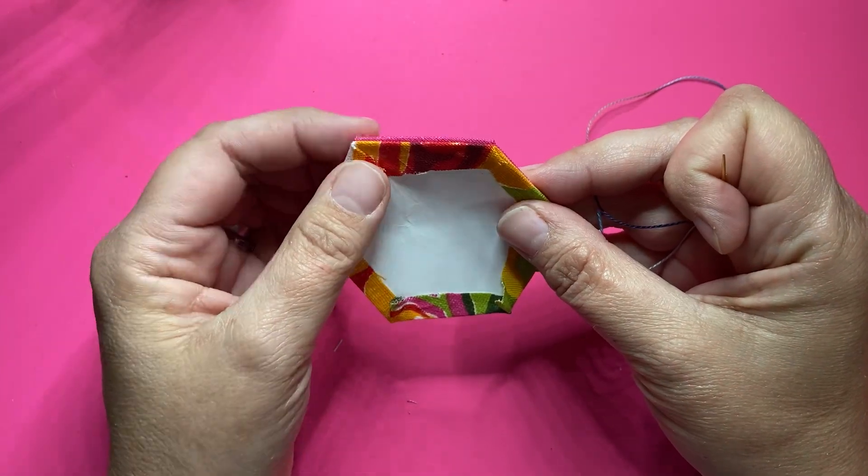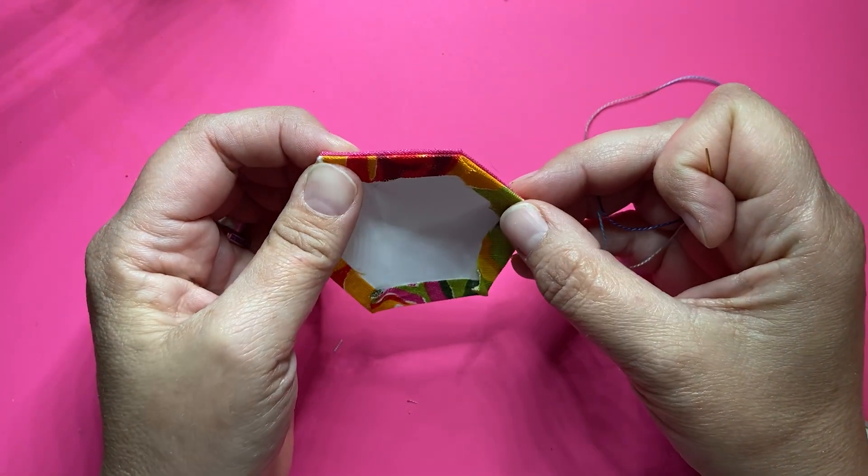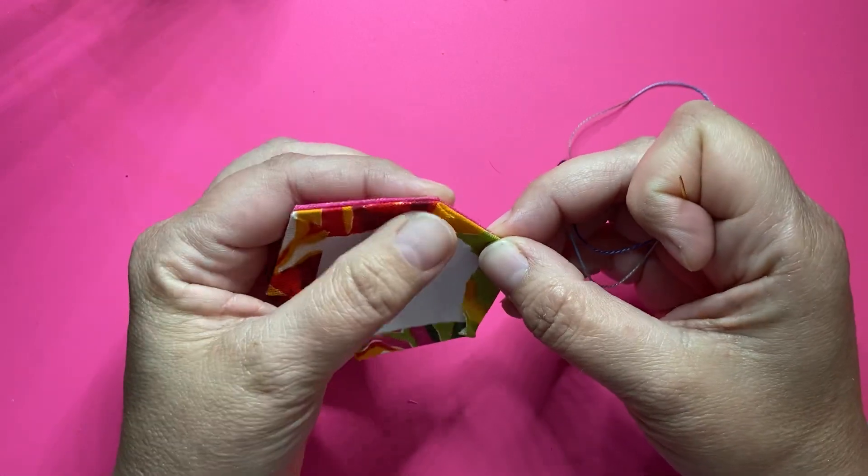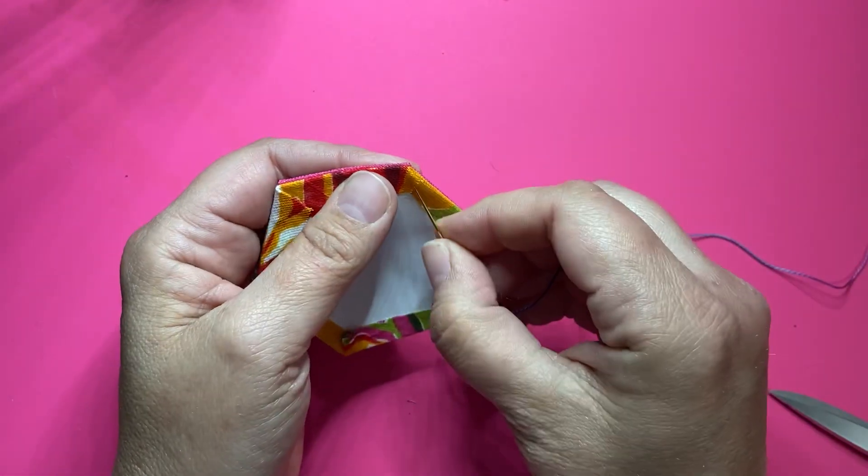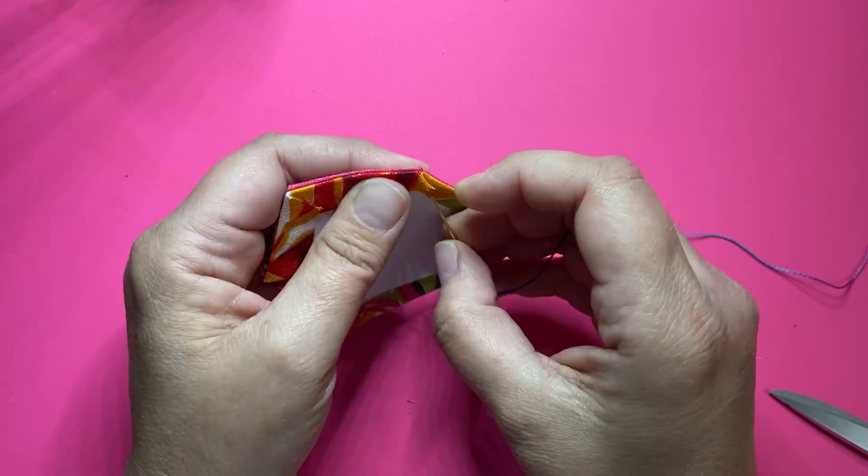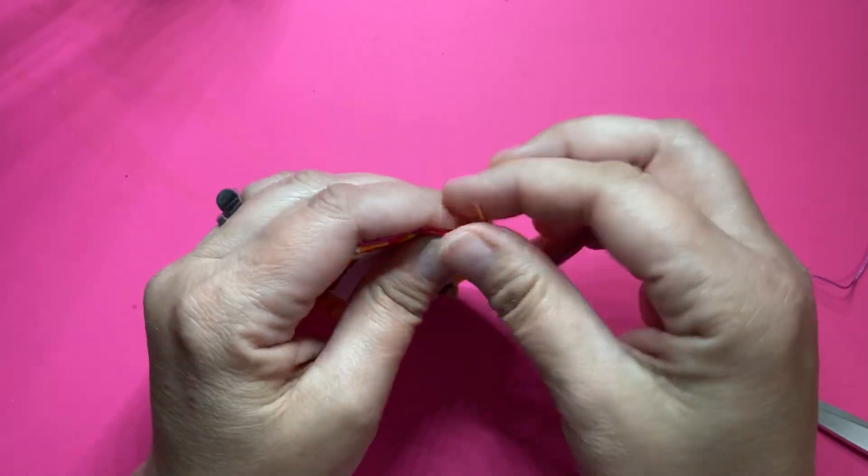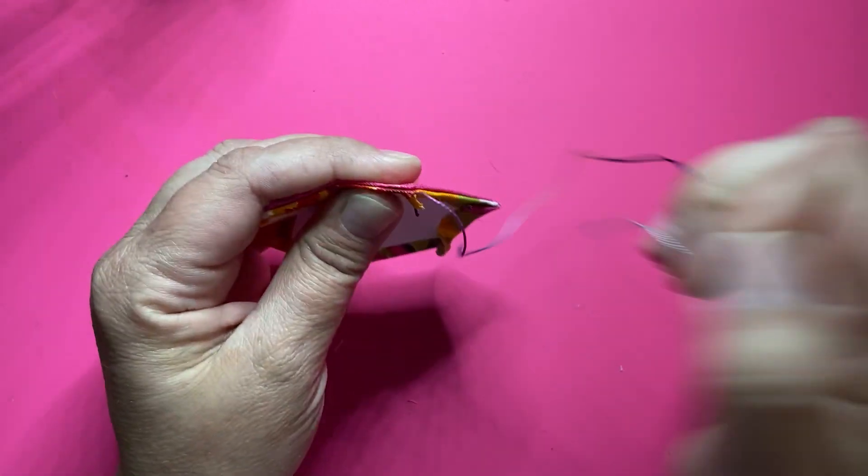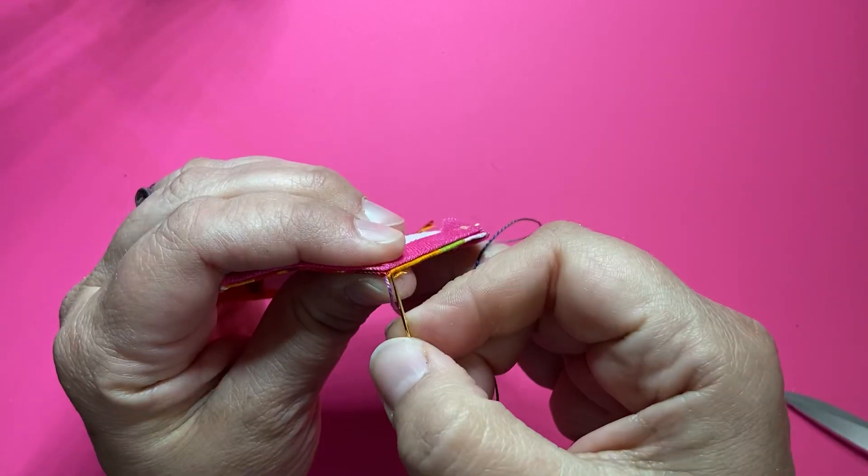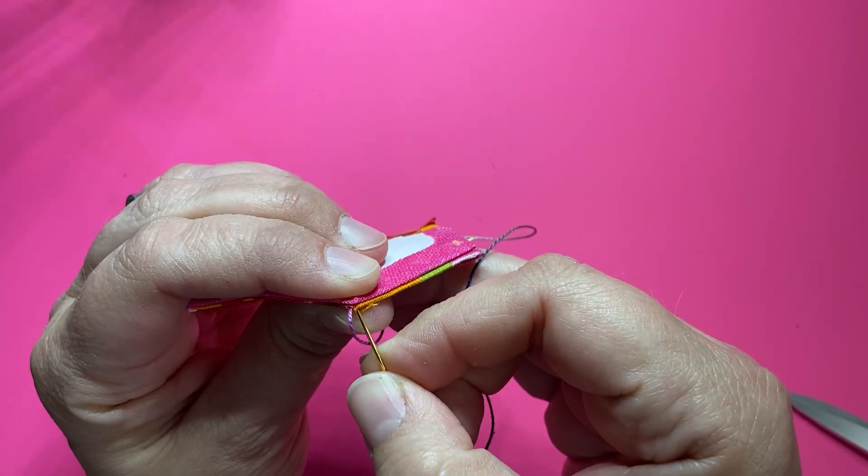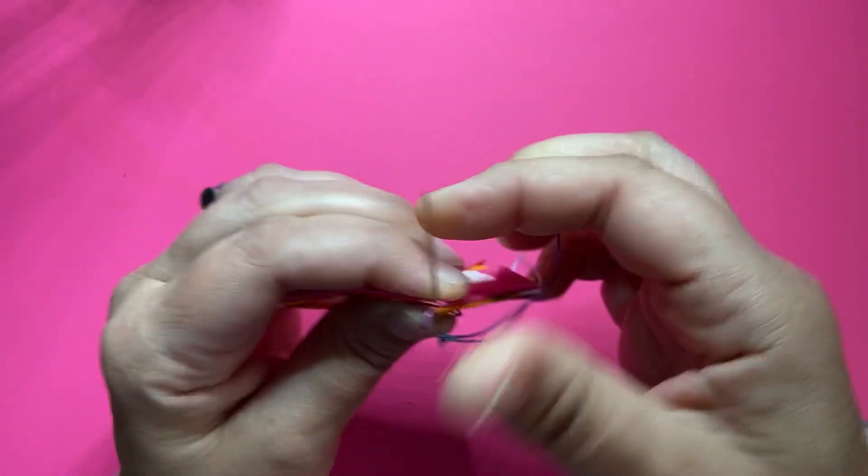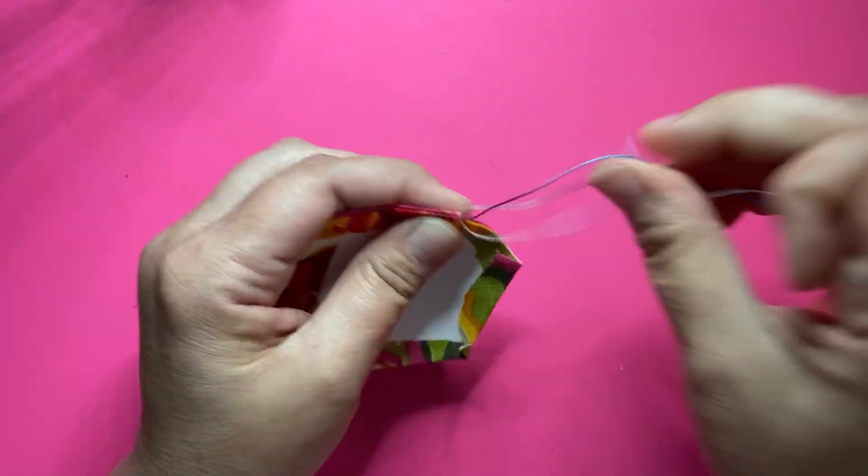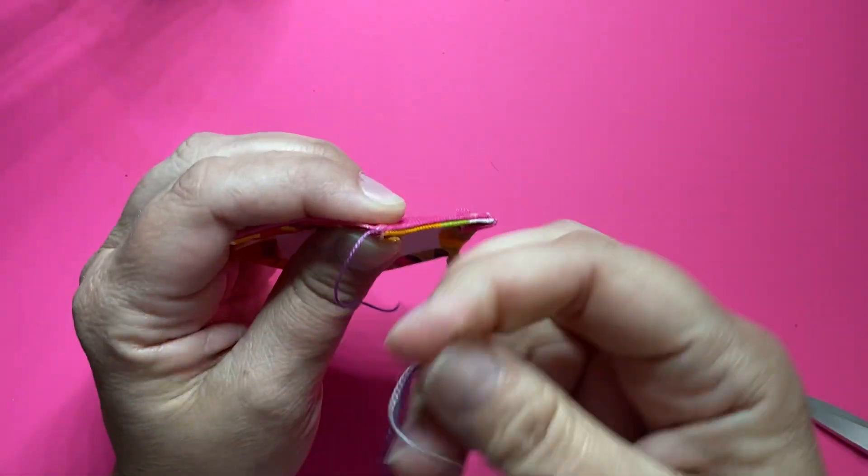And like a thinner thread, maybe a 60 or 80 weight polyester. Okay, so I'm going to come up into the corner here. I put the hexagon that's closest to me, I have to give it a little tug, I'm going to go corner to corner. I'll tug again, and I'm going to go through once.